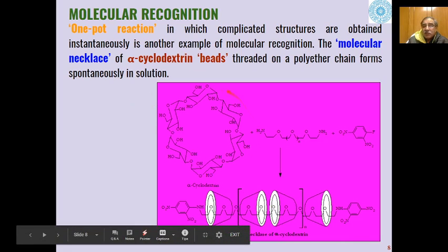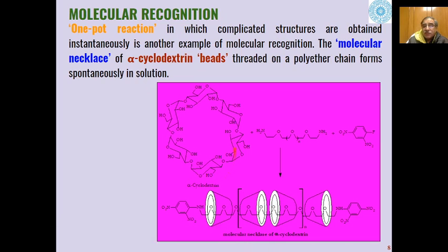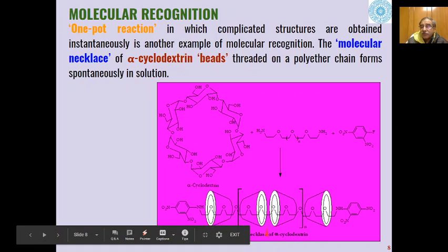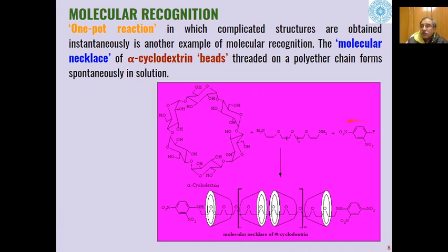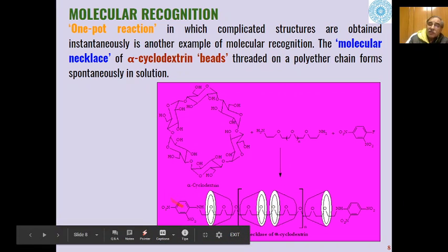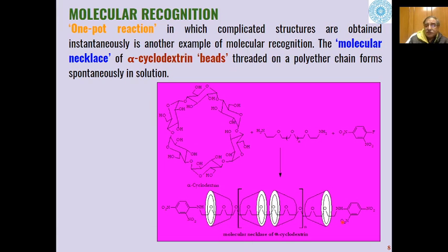Another example is the complexation of alpha-cyclodextrin with polyetheramines in the presence of an aromatic compound, meta-dinitrofluorobenzene. When complexation takes place, a necklace of alpha-cyclodextrin is formed around the polyether complex, which forms a covalent bond with the dinitrofluorobenzene. This again shows molecular recognition for such systems.